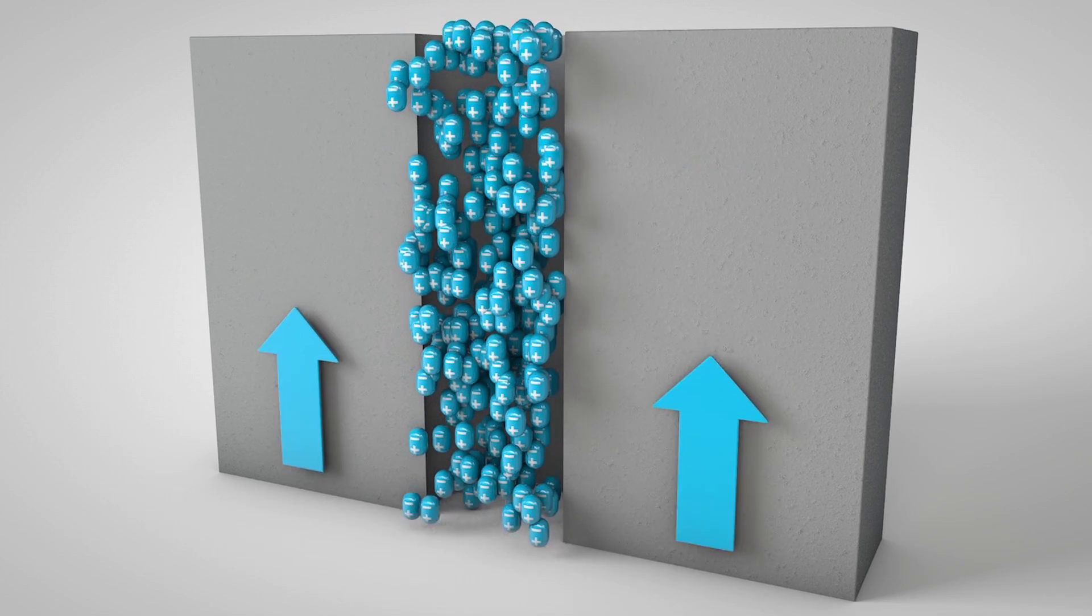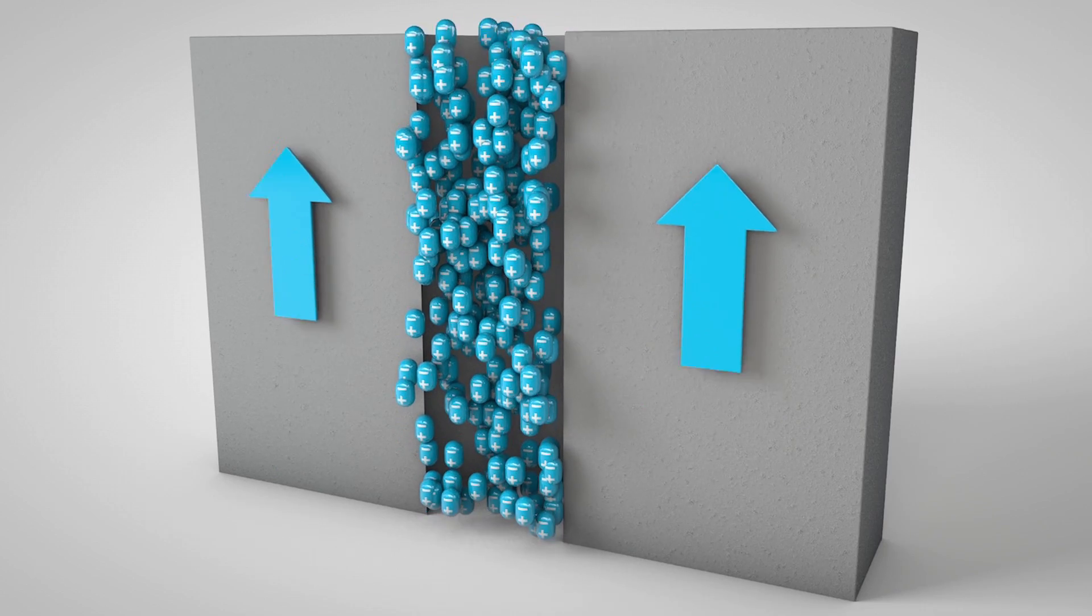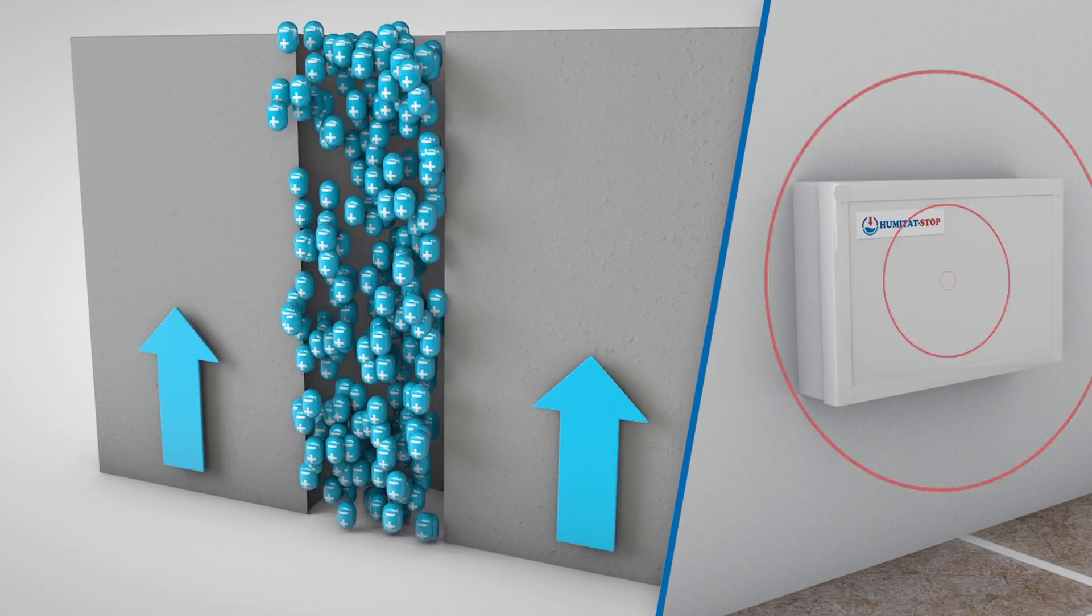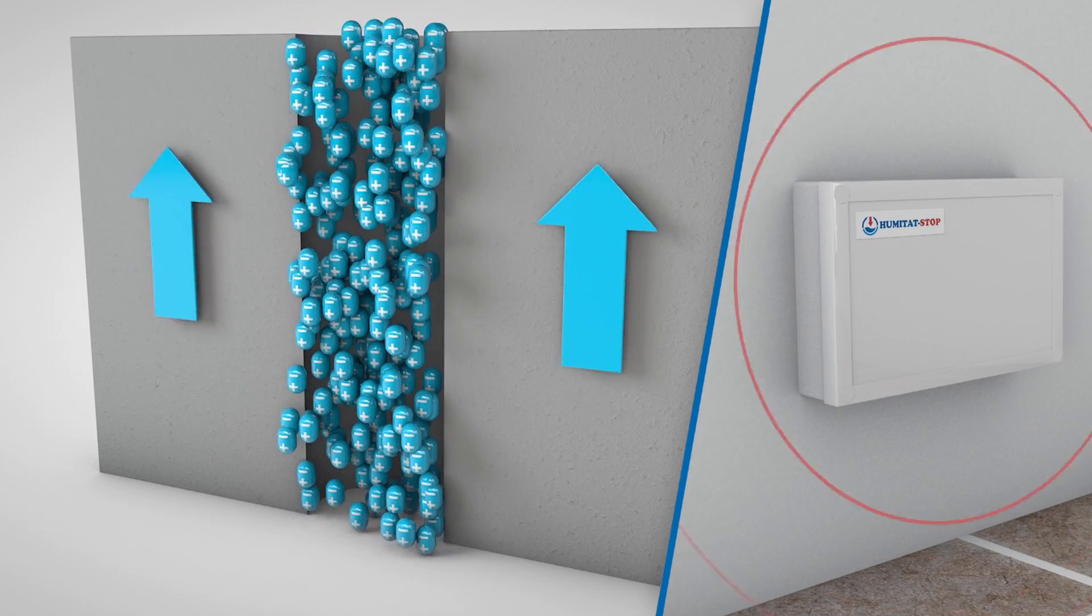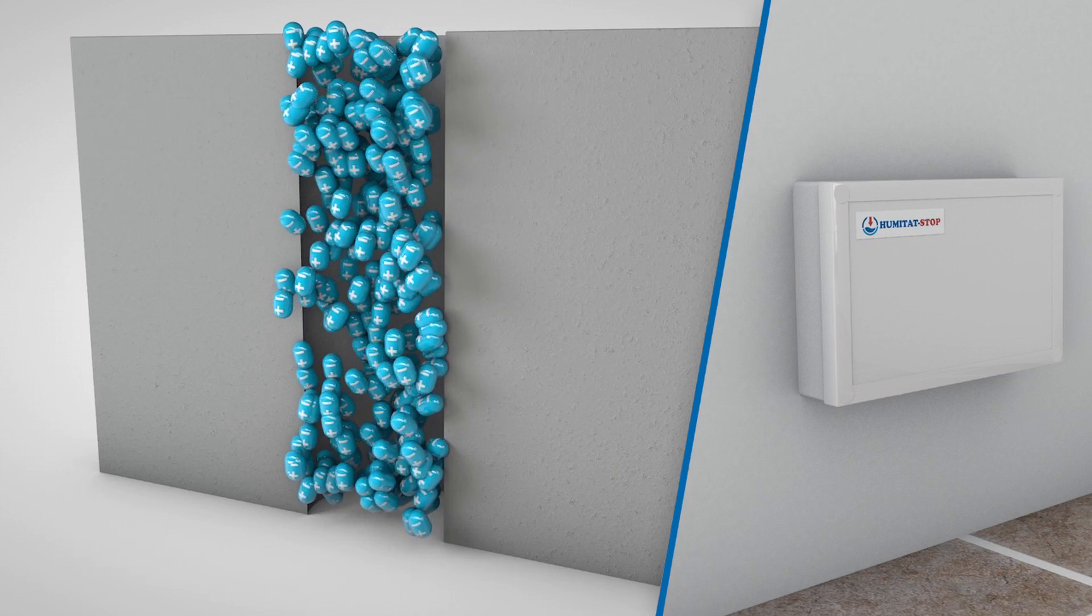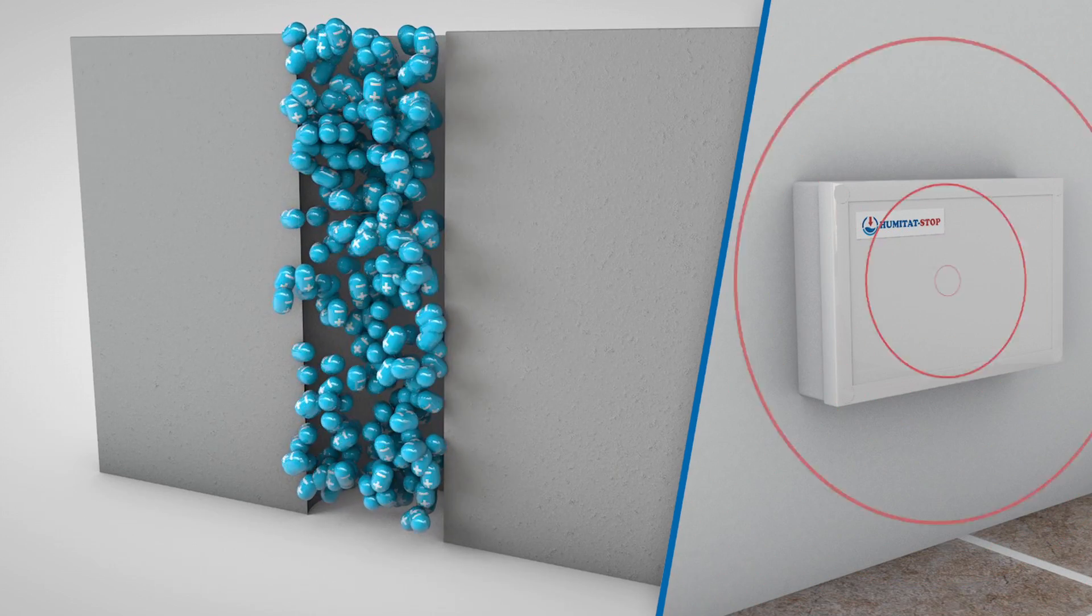because the negative poles of the water molecules are oriented upwards. The HS221 emits very low frequency waves, which penetrate the walls and floors of buildings and prevent the confluence of water molecules with the negative poles facing up.